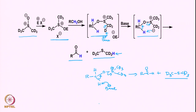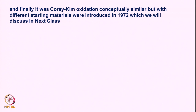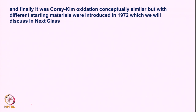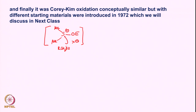Having established this intramolecular abstraction of a proton, many more oxidations have been reported. It was finally Corey and Kim who utilized conceptually similar but somewhat different starting materials. One can also get a crucial intermediate that comes from dimethyl sulfide, where there is a leaving group. This intermediate expected to form is derived from DMSO, to which alcohol reacts to form the next intermediate allowing formation of the ketone or aldehyde.